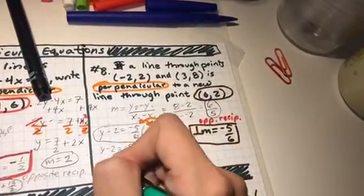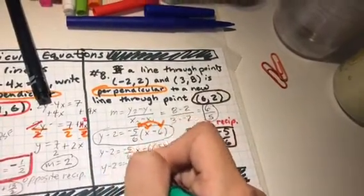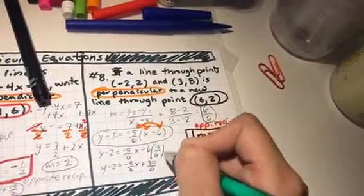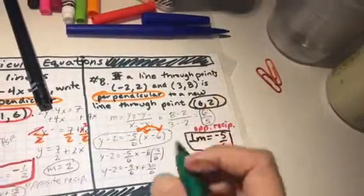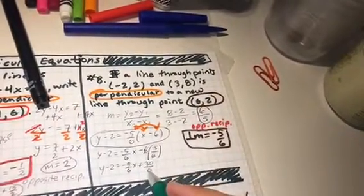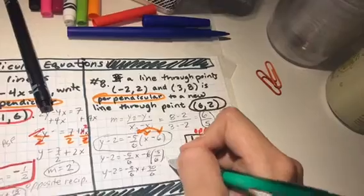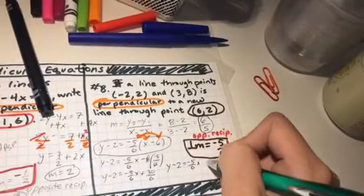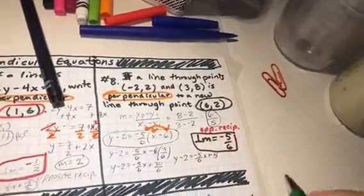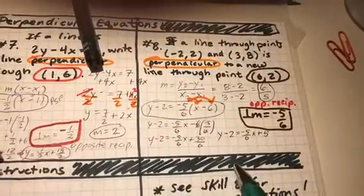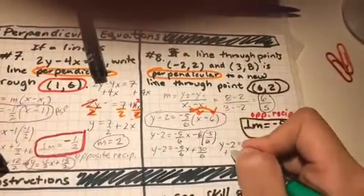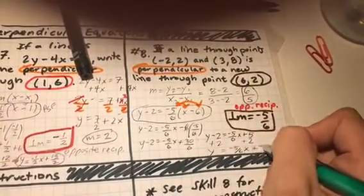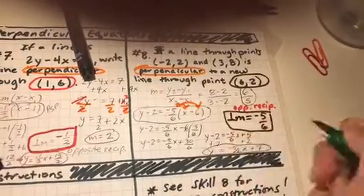So y minus 2, negative 5 sixths x, a negative times a negative is a positive, so I get 30 over 6. I could have actually cancelled that. Notice 30 over 6 is actually 5. So I'm going to rewrite this: negative 5 over 6 x plus 5. Beautiful. Now I'm almost done. I'm just going to add 2 to both sides. I get my final answer. Yay.